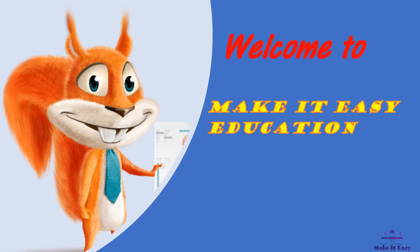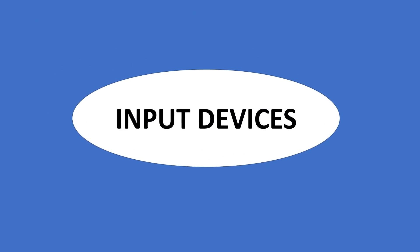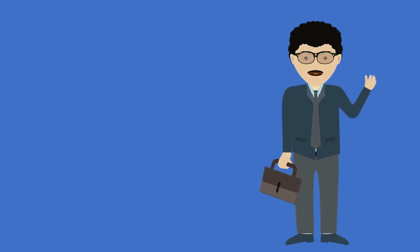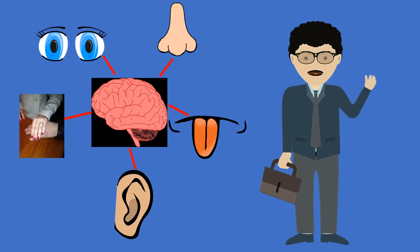Welcome to Make It Easy Education. Input and Output Devices. In human beings, input is given to the brain through the five sense organs.